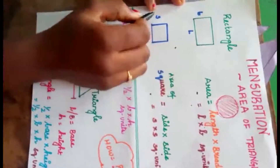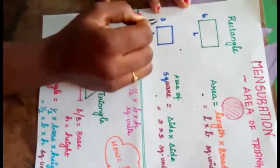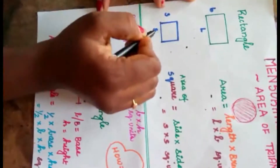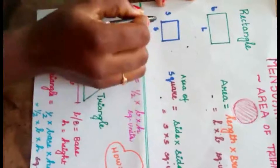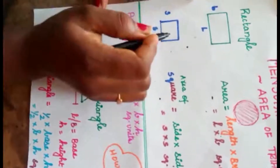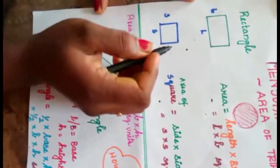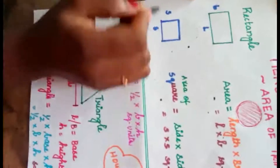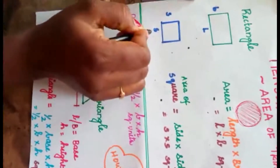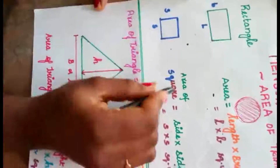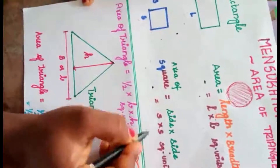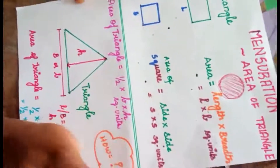Coming to square — a square also has four sides, but all four sides of a square are equal. We don't have separate length or breadth in case of a square; both are equal. So area of square is equal to side into side square units.